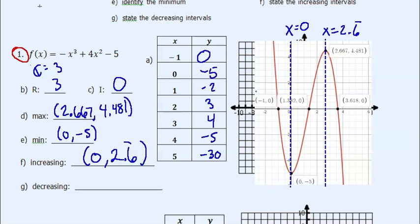And there will be decreasing on the rest of it. So from negative infinity to 0, and then it also decreases from 2.6 repeated to positive infinity. The u just means that we have multiple intervals.